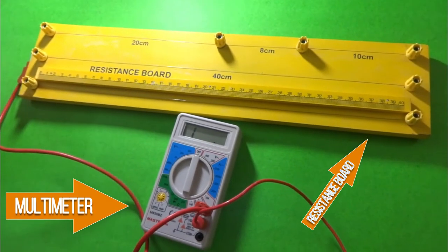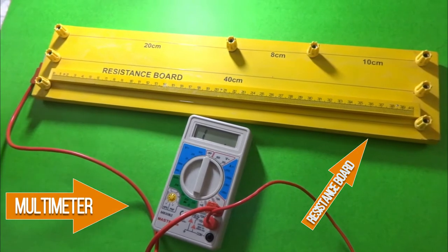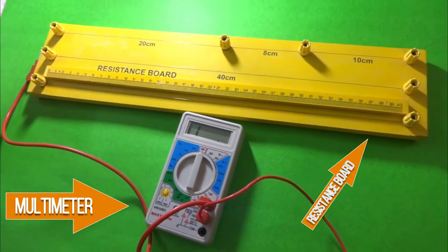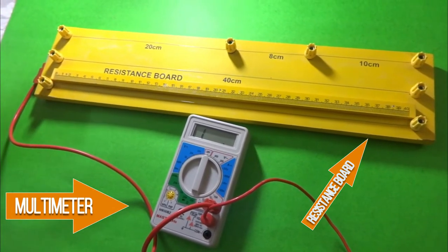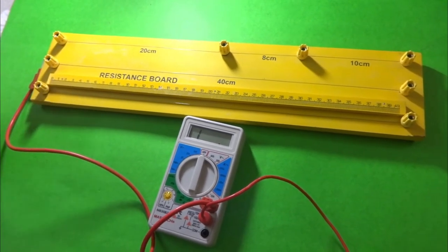This is the activity to show the factors on which the resistance depends. Resistance is directly proportional to length of the conductor and inversely proportional to the area of cross section of the conductor.